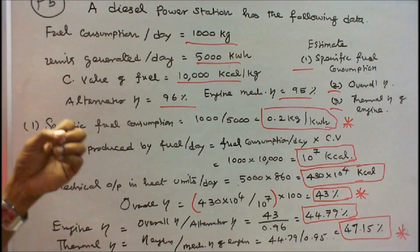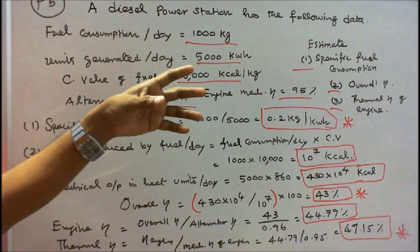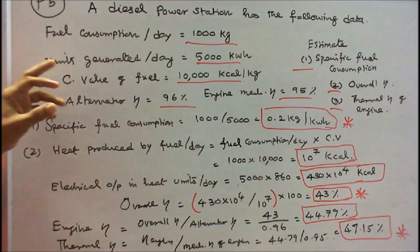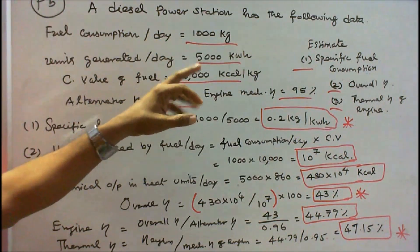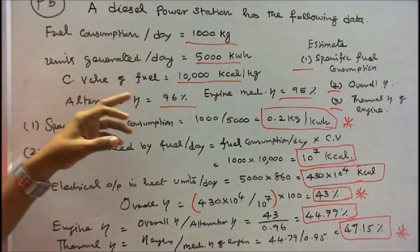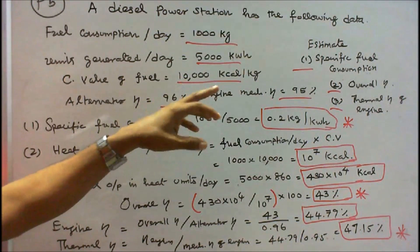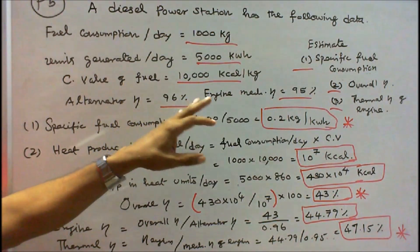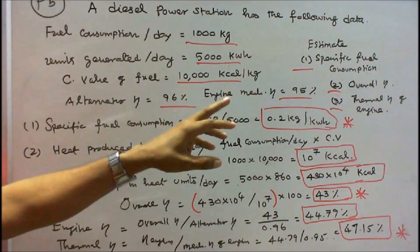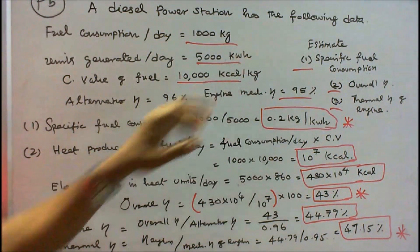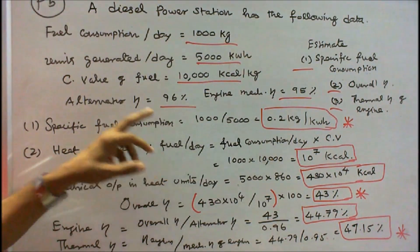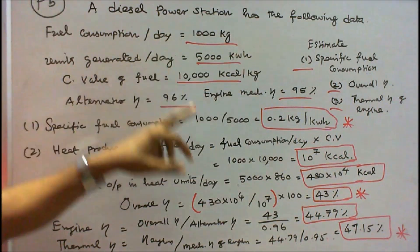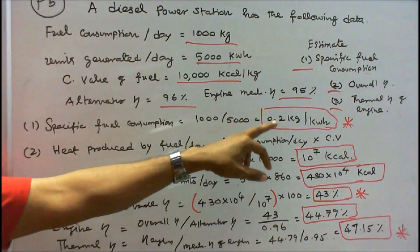Problem number 5: a diesel power station has the following data — fuel consumption per day = 1000 kg, units generated per day = 5000 kilowatt-hours, calorific value of fuel = 10,000 kilocalories per kg, alternator efficiency = 96%, engine mechanical efficiency = 95%. Estimate: (1) specific fuel consumption = fuel consumption per day ÷ units generated per day = 1000 ÷ 5000 = 0.2 kg per kilowatt-hour.